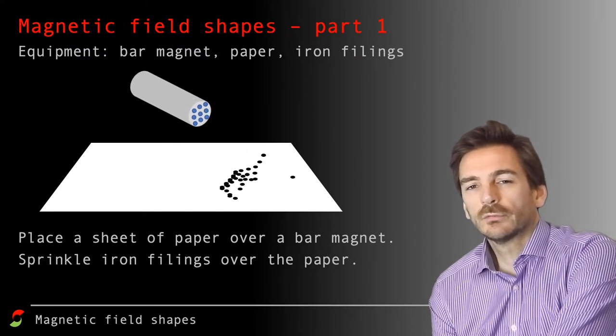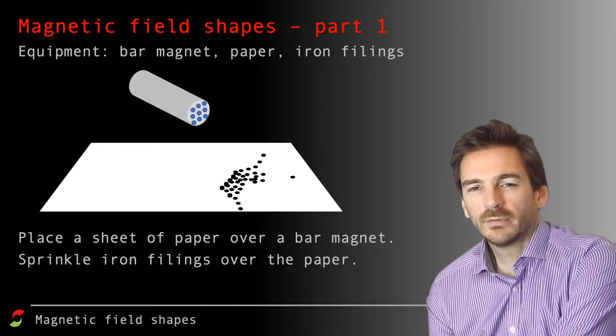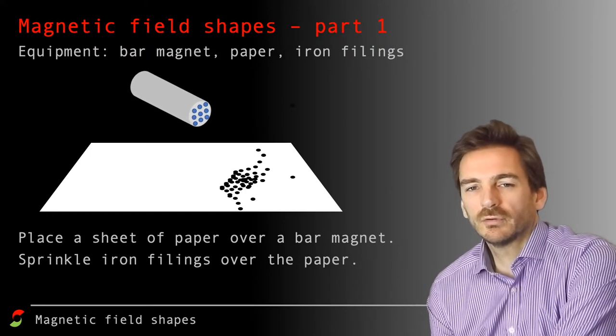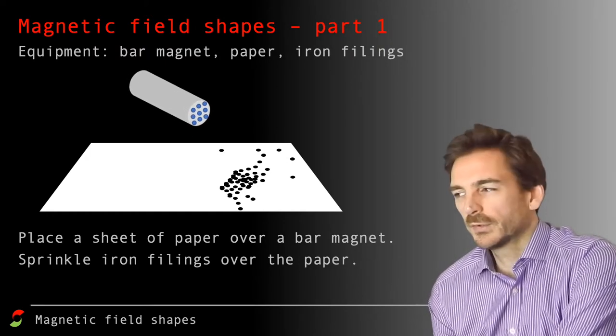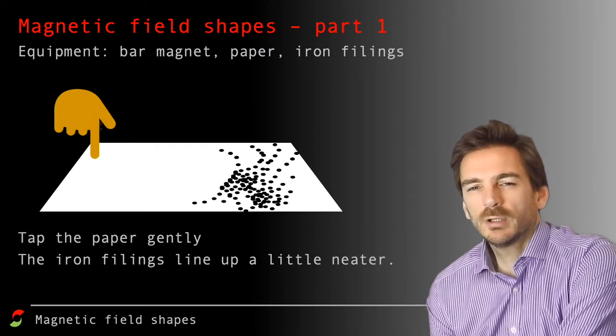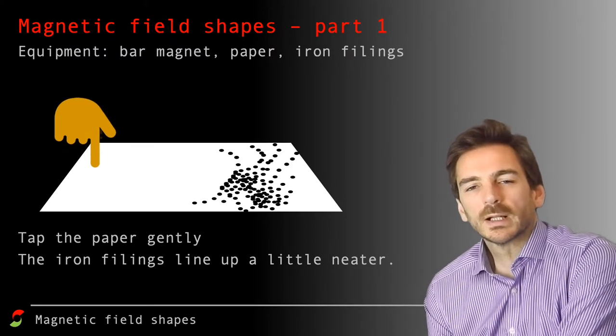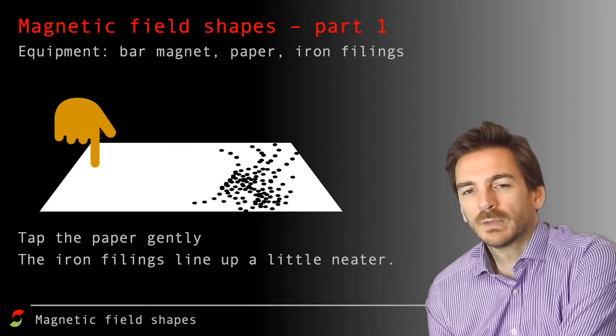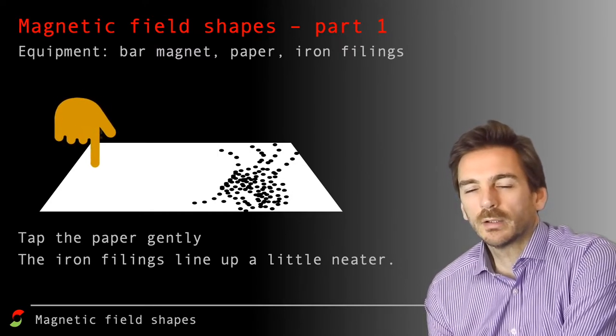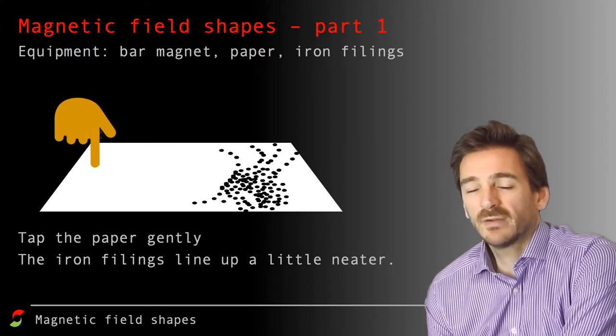What those iron filings will do eventually is they will line up along with the magnetic field lines, they might clump together in areas. So once you've done that for a little while, and I've only done it for a little bit here, just use a finger and you gently tap onto the piece of paper, you might notice that the iron filings shuffle around and there's a little bit of a clearer pattern to the magnetic field lines. In an exam, you need to be able to go through that procedure to identify the magnetic field lines.